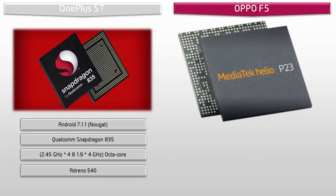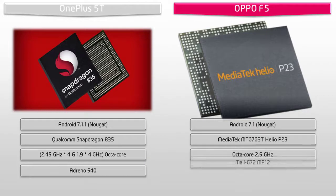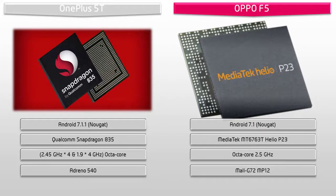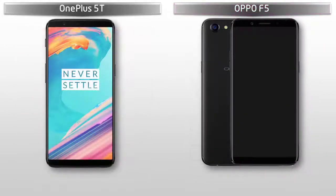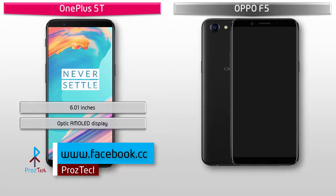The Oppo F5 works on Android 7.1 Nougat and comes with a Helio P23 2.5 GHz octa-core processor with Mali-G72 MP12 GPU. Moving on to display, the OnePlus 5T comes with a 6.01-inch Full HD Optic AMOLED display.